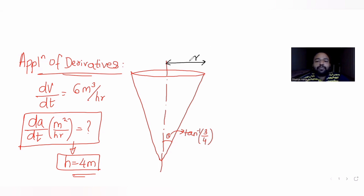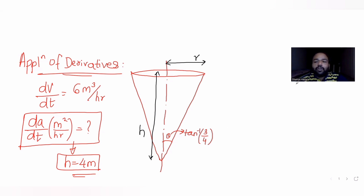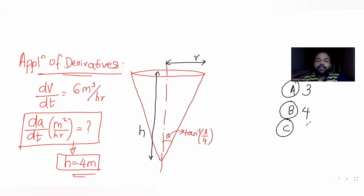If I know my radius is r and my height is h, they have also given us four options with respect to the change in area with respect to time. The first option is 3, the second is 4, the third is 5, and the last option is given.